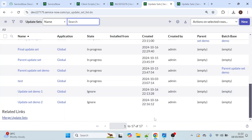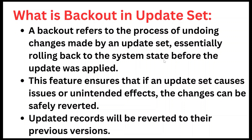This is how we can use the back out option in update set. If we use the ignore option then the changes remain as-is, which is not a good practice. When we click on back out, the changes are completely erased from the table. Whatever points we discussed in this video are all covered in the definition. That's all for today. If you find this video helpful, please like, share, comment, and subscribe. Thanks for watching, bye.